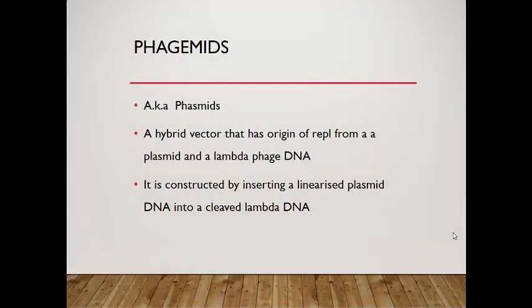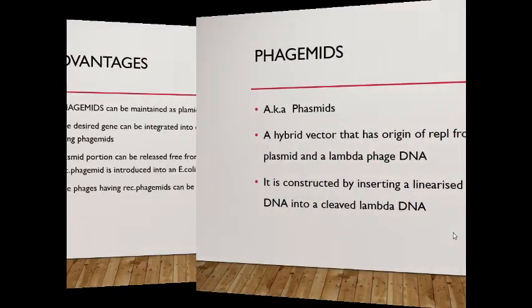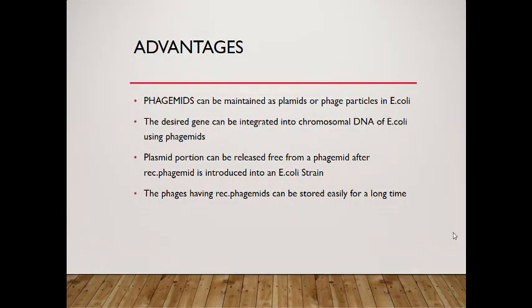There are also called phagemid hybrid vectors that have origins of replication from the plasmid and lambda phage DNA. It is constructed by ligation of linearized plasmid DNA ligated with lambda DNA. It can be used to maintain as plasmid or phage particles in a host cell. The derived gene can be integrated into a chromosome using a phage cross. Recombinant phagemid can be released and stored for a long time.